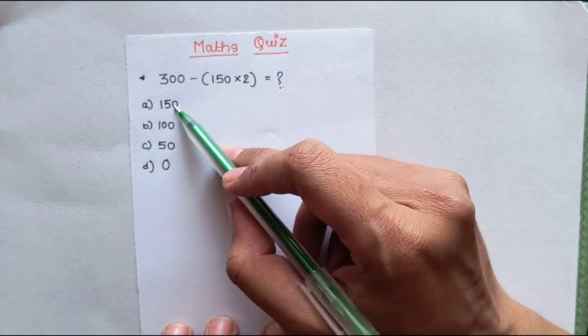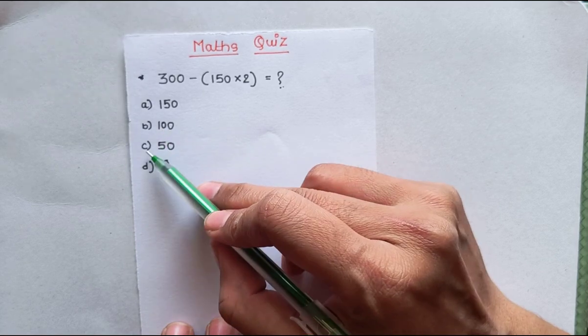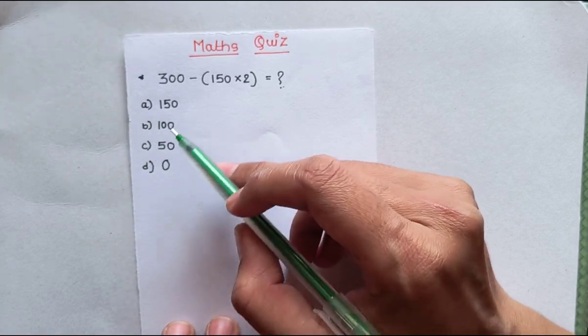Our options are: a is 150, b is 100, c is 50, and d is 0. What will be the answer?